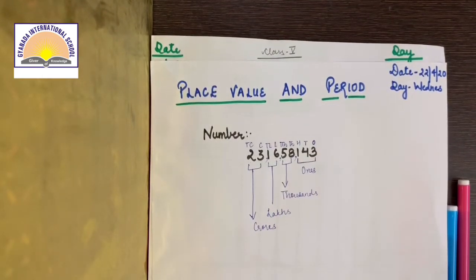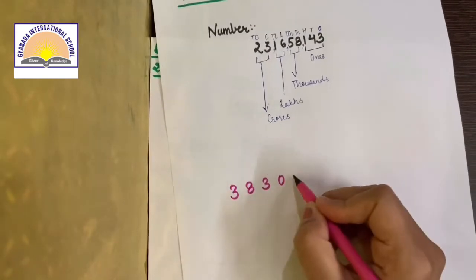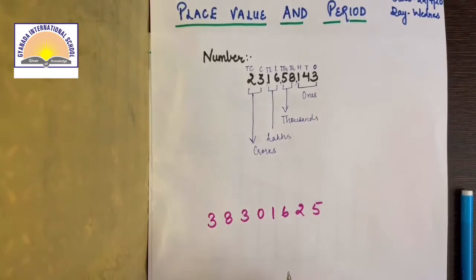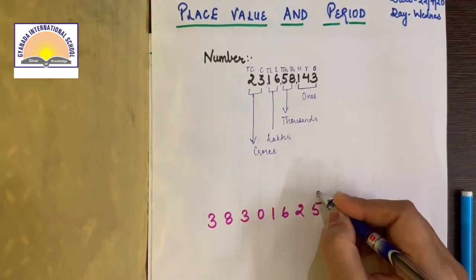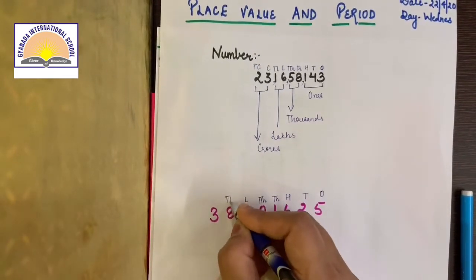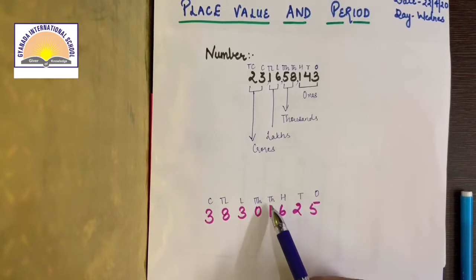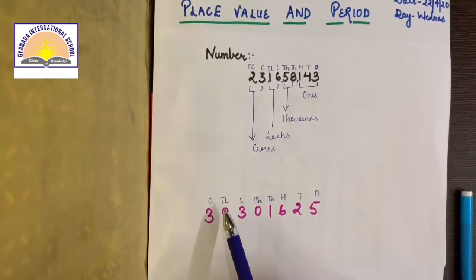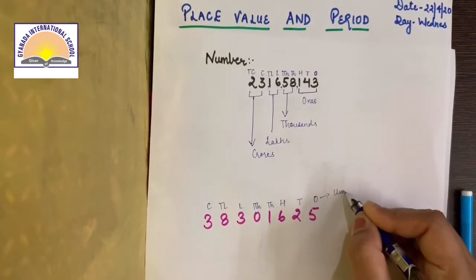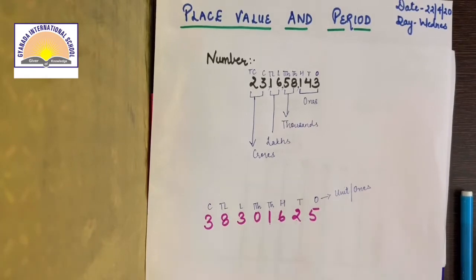We will do one more question. For example, the number is 3, 8, 3, 0, 1, 6, 2, 5. First step is, first step always is to put its place value. Once, tenth, hundreds, thousand, ten thousand, lakh, ten lakh and crores. So what is the place value of one? The place value of one is thousand. What is the place value of eight? The place value of eight is ten lakh. What is the place value of five? The place value of five is ones. We also called ones as unit place. You call it unit or you call it ones. What is the place value of two? The place value of two is tens.